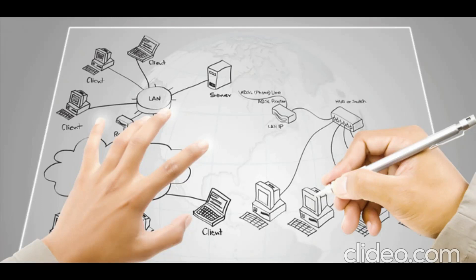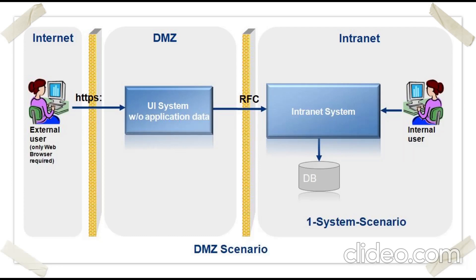These are the important elements of network design. First is the demilitarized zone, or DMZ. It's a small network between the internal network and the internet that provides a layer of security and privacy.